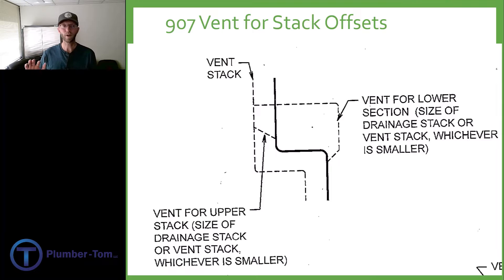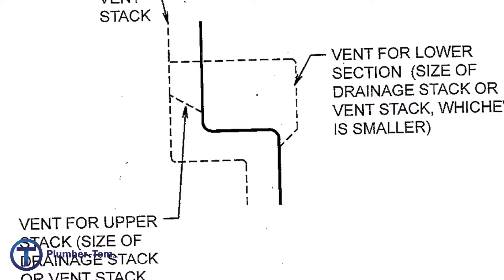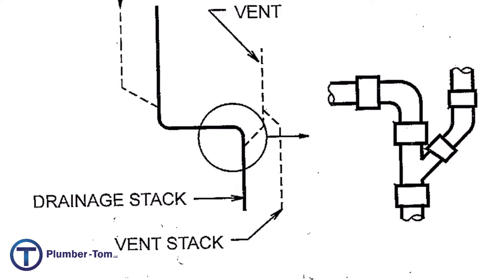In section 907, we look at vents for stack offsets. It says if there are five or more branch intervals above that offset, we need to provide some venting so that as fluid comes down through that offset, it has enough air to flow. We would need to provide a vent on the upper end of that offset and on the lower end. You can see how this branches off around that offset and ties back over into the vent stack. Here's an example of how we might branch off on the lower end of this horizontal offset — also known as a yoke vent — where it's intended to provide airflow into the lower end of that offset. You can just branch off with a Y before that offset 90 and send that vent over to the vent stack.